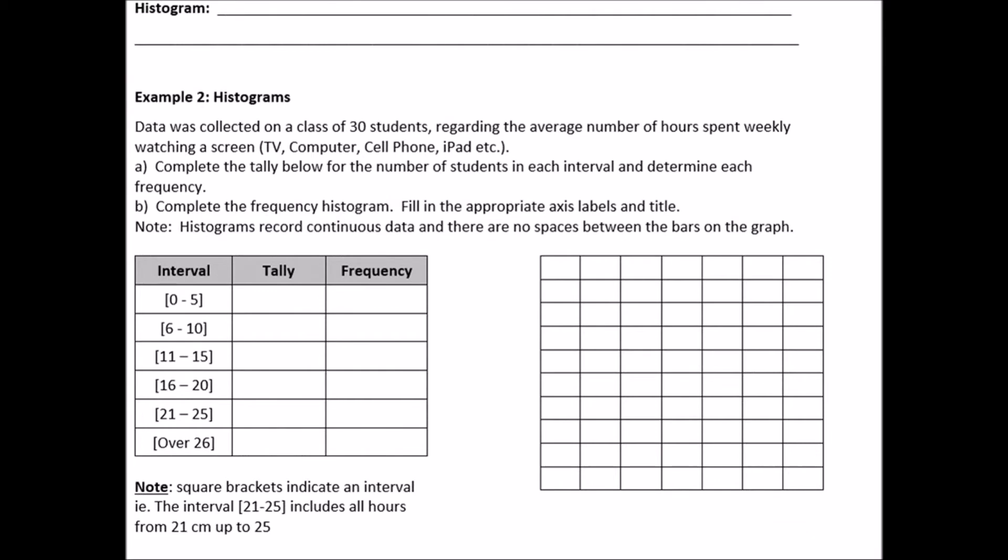Whereas the circle graph is when we want to see the percentage or proportion of a whole. So the whole in this case is all of Dexter's expenses. We want to see the proportion of his percentages that are going to each expense. Okay. So now what is a histogram? So a histogram is very similar to a bar graph, but the difference is that a histogram groups data in ranges.